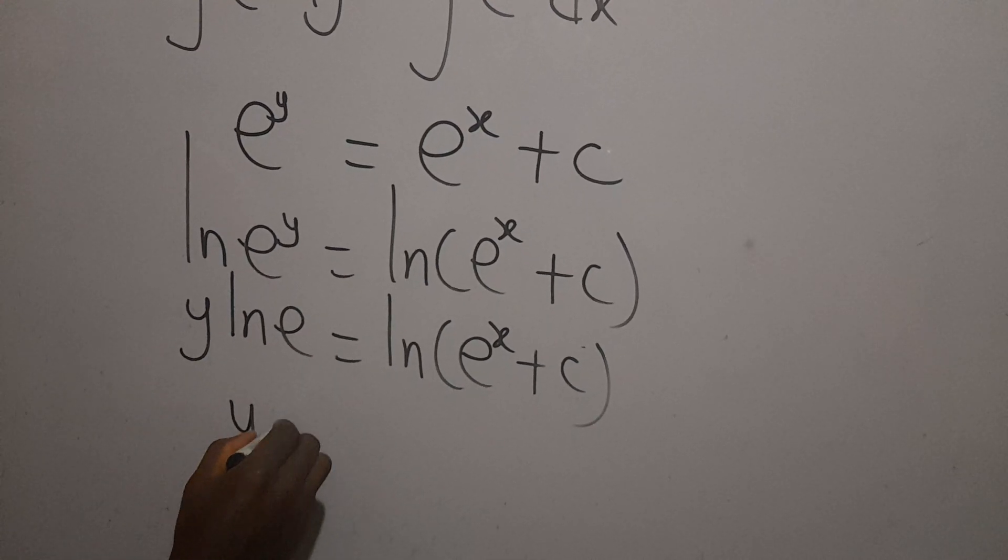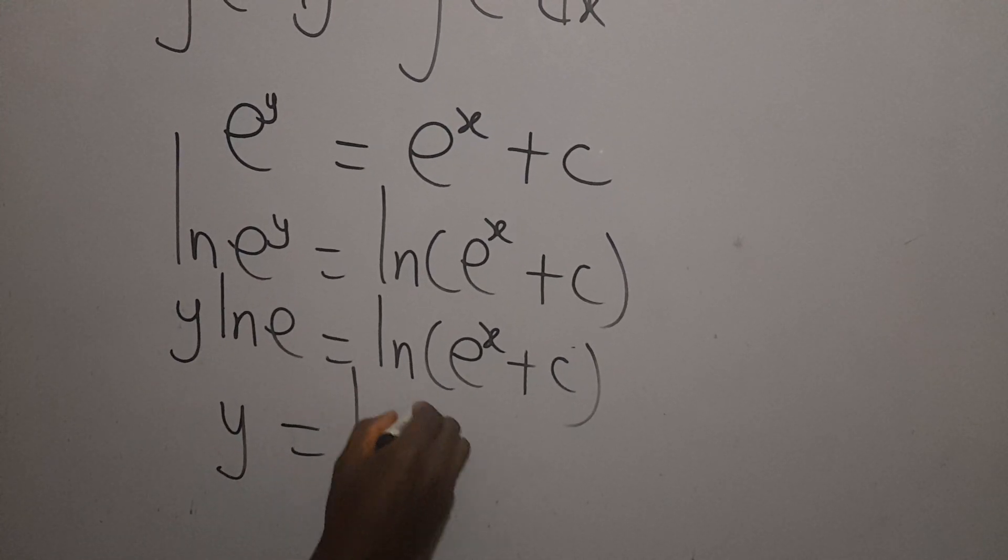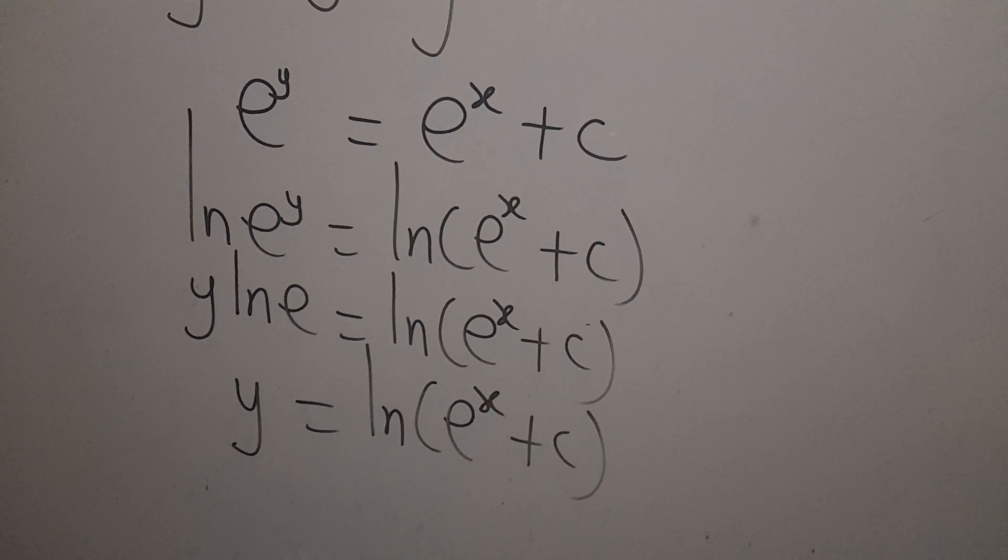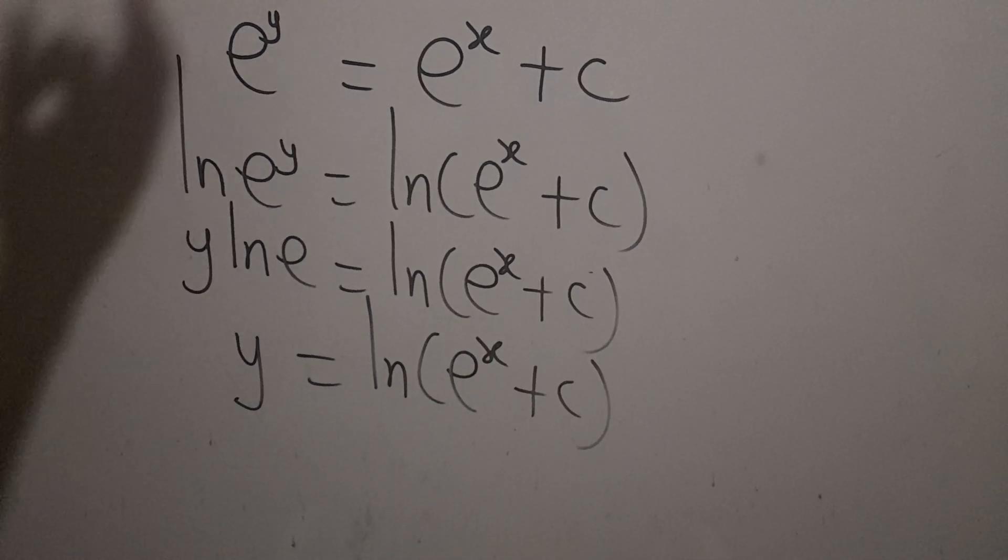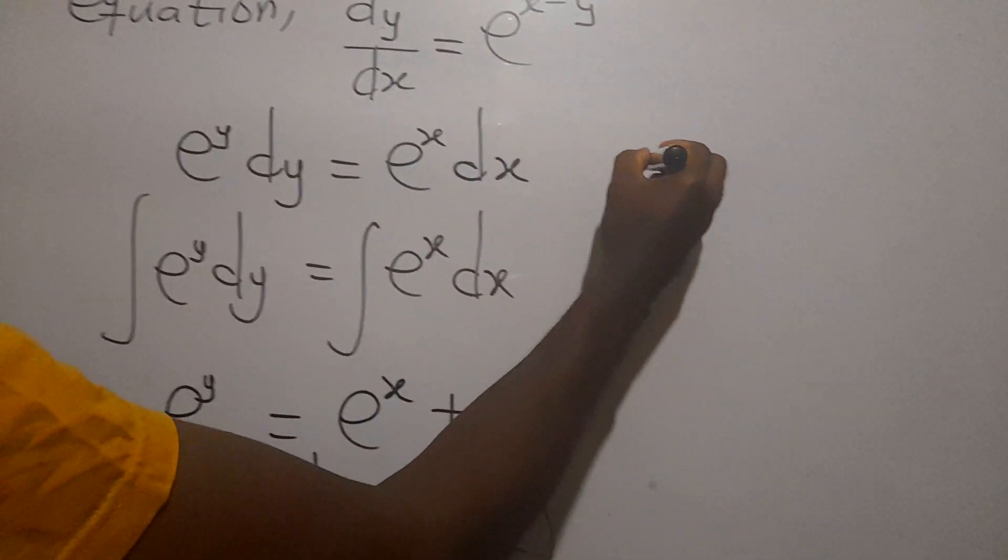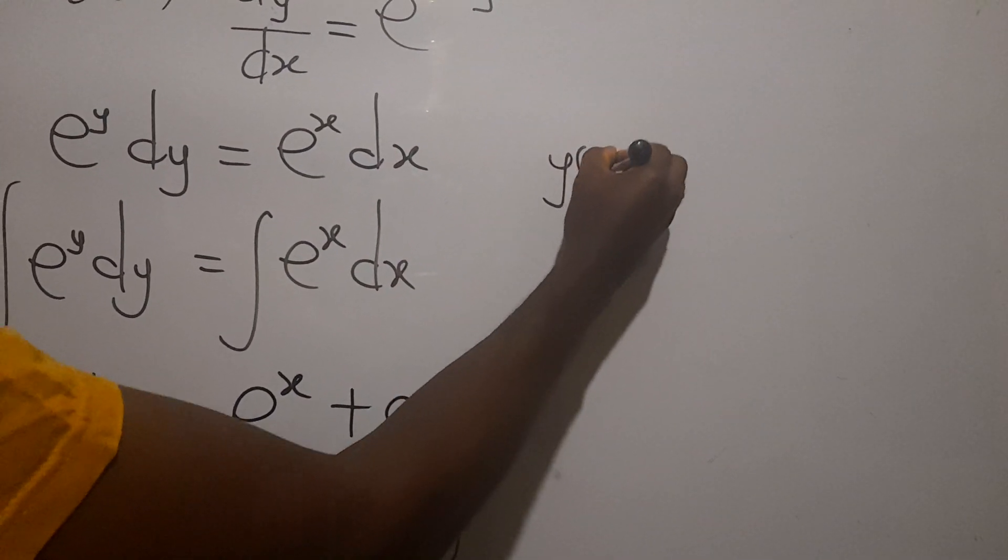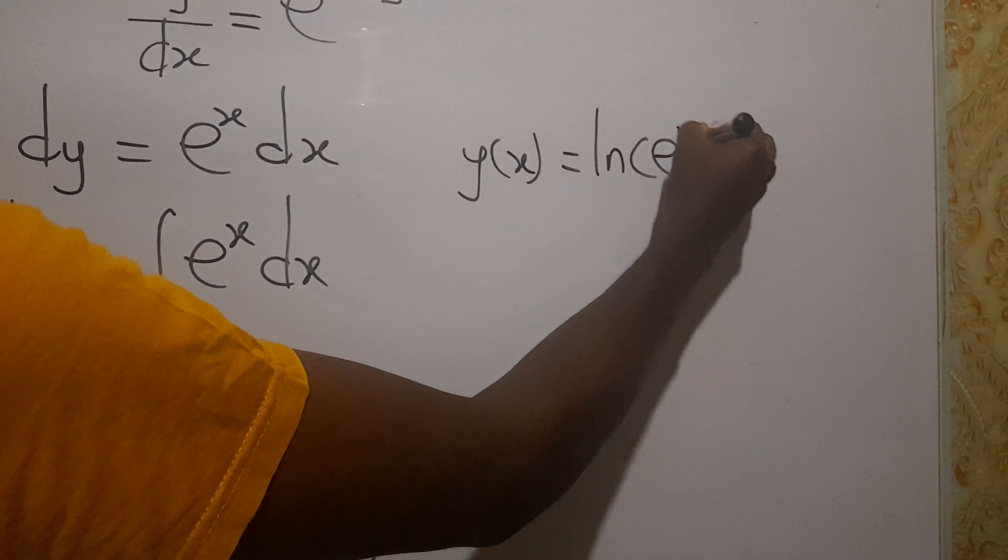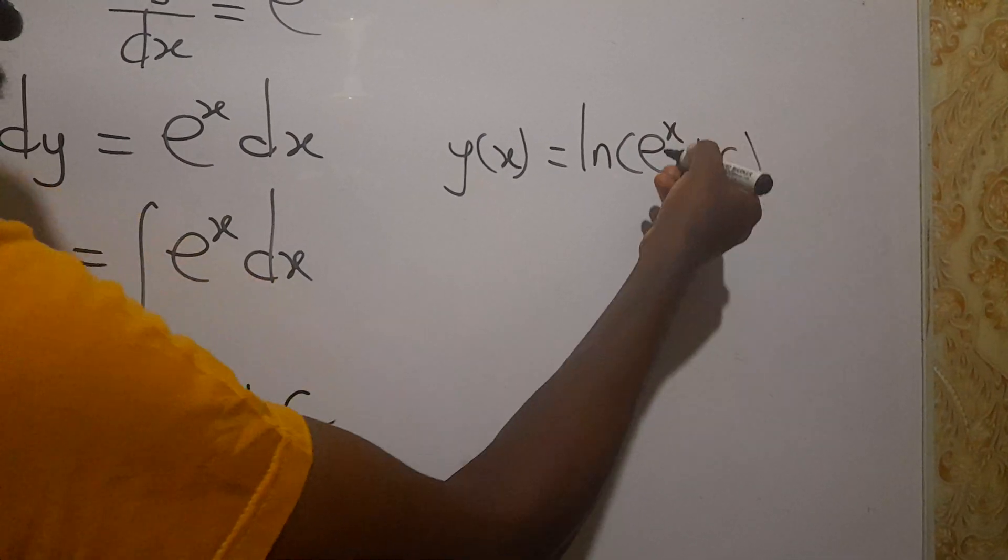Then we cancel and y will be equal to ln e exponent x plus c. Our general solution to this differential equation is that y(x) is equal to ln(e^x + c).